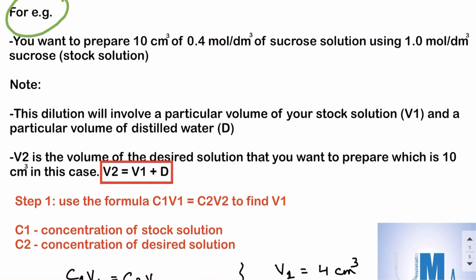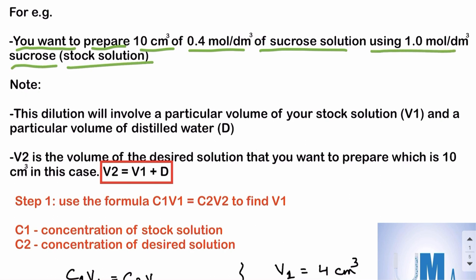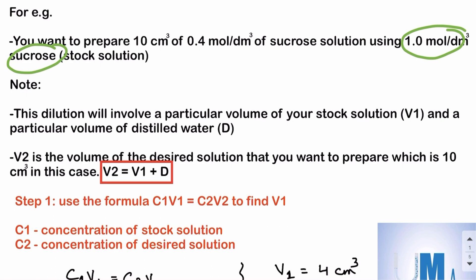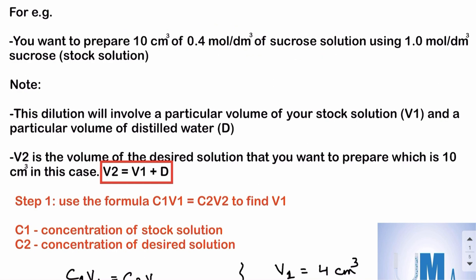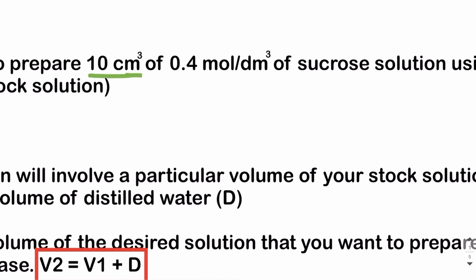Let's discuss an example of simple dilution. You want to prepare 10 cm³ of 0.4 mole per dm³ sucrose solution using 1.0 mole per dm³ sucrose as the stock solution. Before solving, you need to understand some variables. The volume of the desired solution you want to prepare is denoted as V2, and the concentration of the desired solution is denoted as C2.